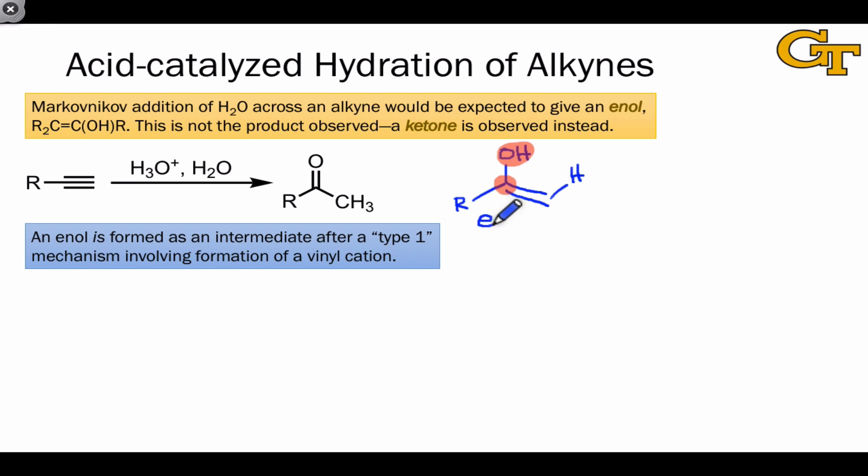This intermediate is called an enol because it contains an alkene, a carbon-carbon double bond, connected to a hydroxyl group, part of an alcohol. So it contains the structural elements of both an alcohol and an alkene connected directly to one another.